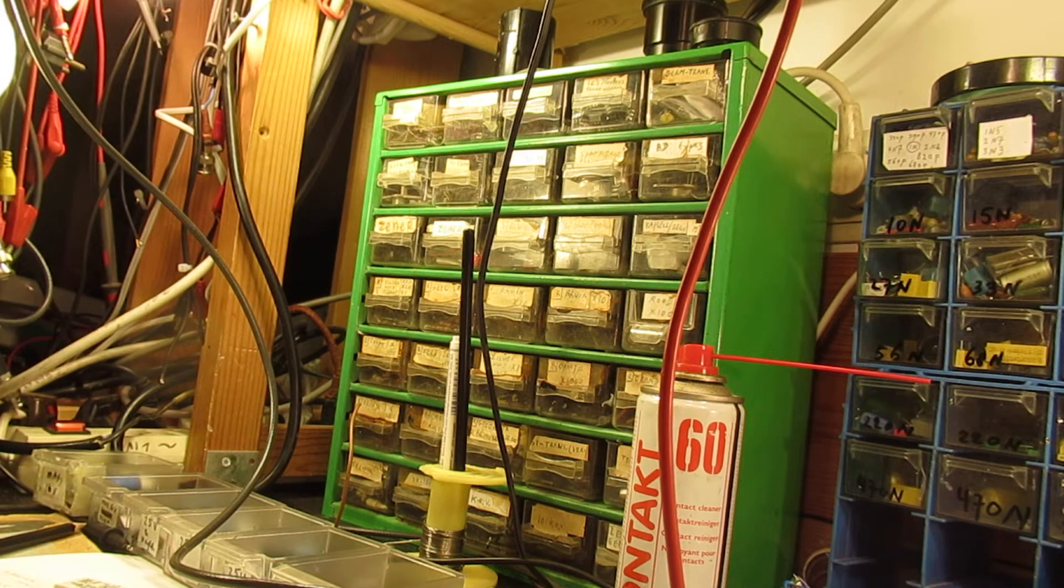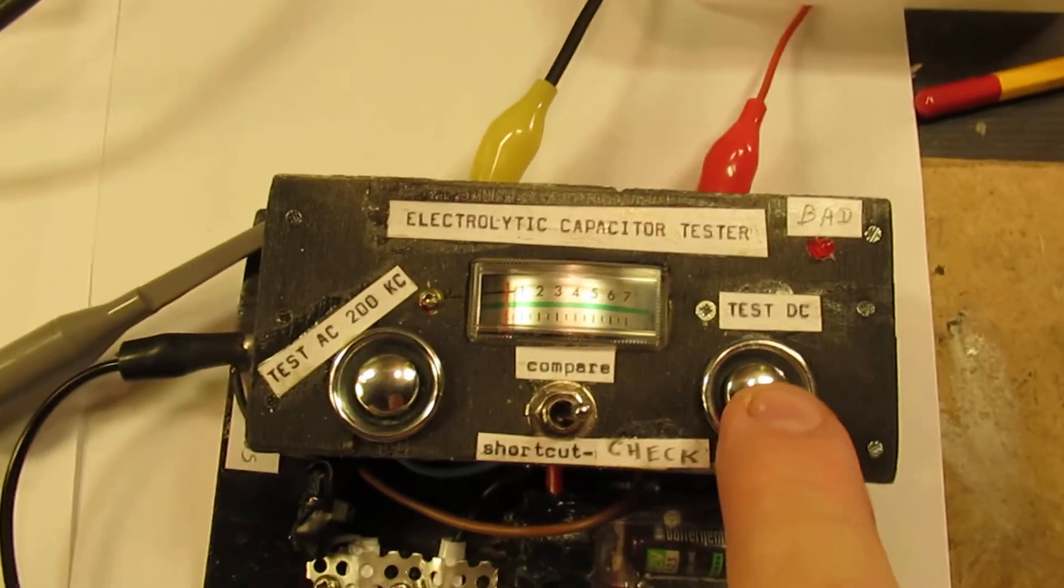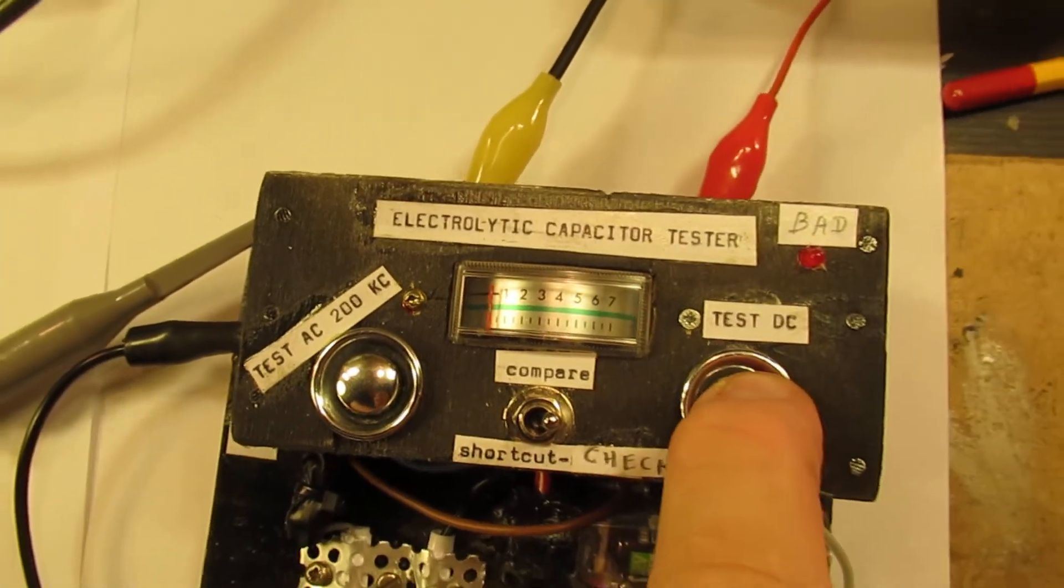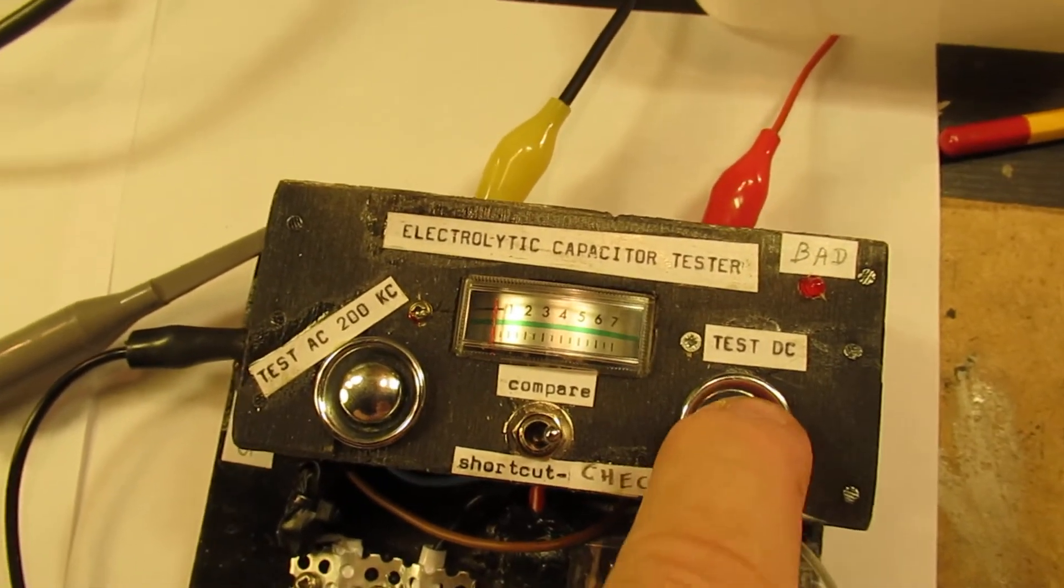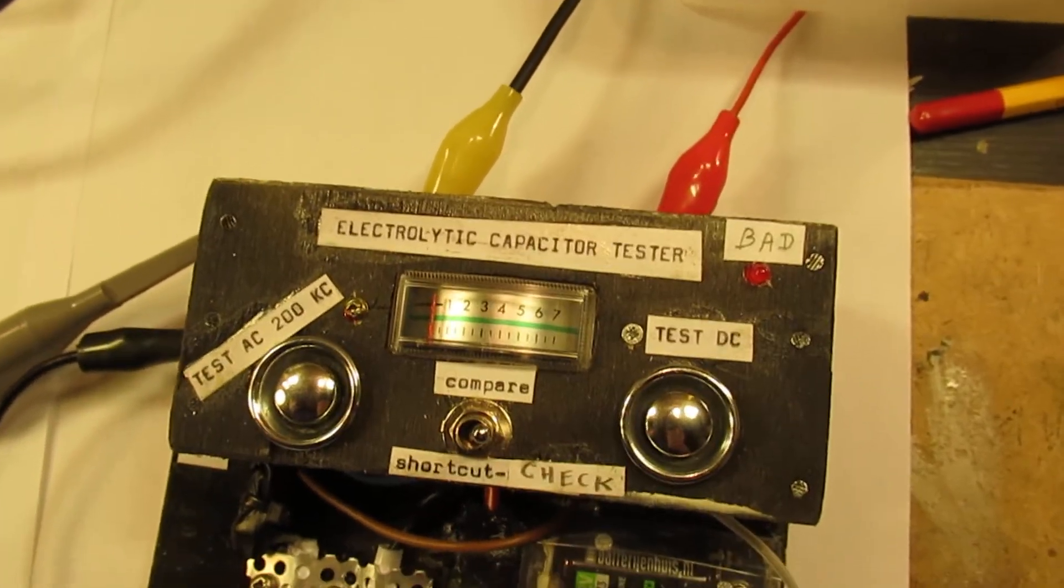I hook it up now to the tester, minus to the minus, positive connected. Let's look at first at the DC test. It shows nothing. That means that no current is flowing. That's a bad sign for such a capacitor of 20 microfarad or so.